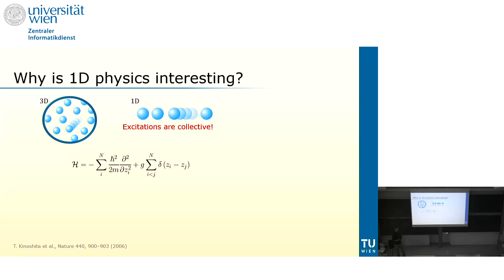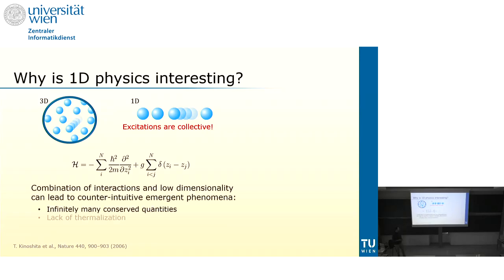When we go to this 1D Bose gas, the model we're working with is called the Lieb-Liniger model, which has a simple expression: just a kinetic term and some contact interaction. This model features an infinite number of conserved quantities - an infinite number of conservation laws - and this severely restricts the dynamics of the system to such a degree that the system actually does not thermalize.